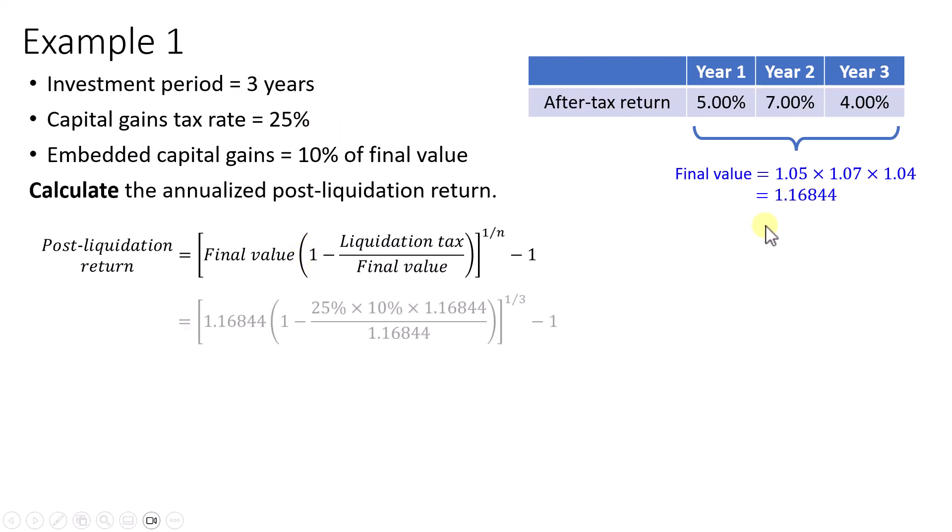The final value here is 1.16844, and for the liquidation tax we'll take 25% of the capital gains, which is 10% of the final value 1.16844. Since the numerator and denominator both contain the final value, it will cancel off and we would have 0.025.